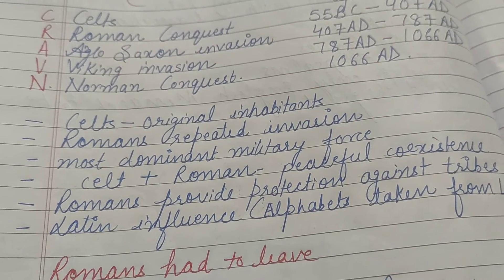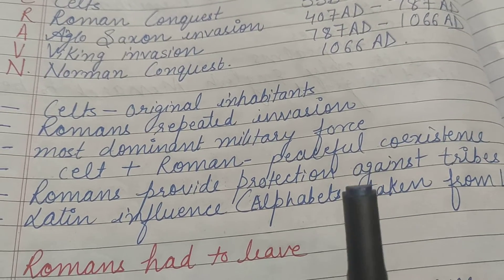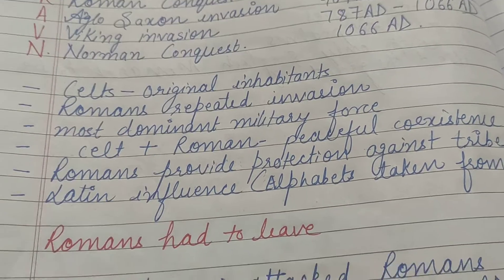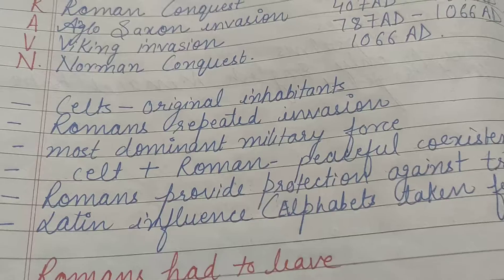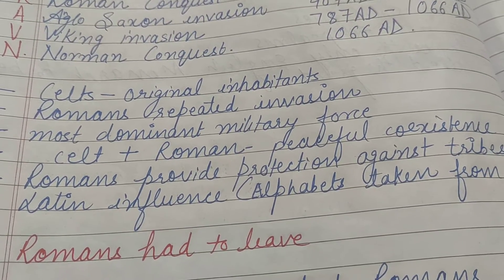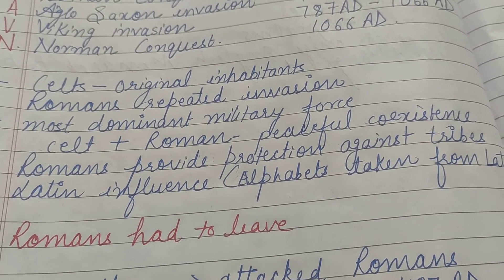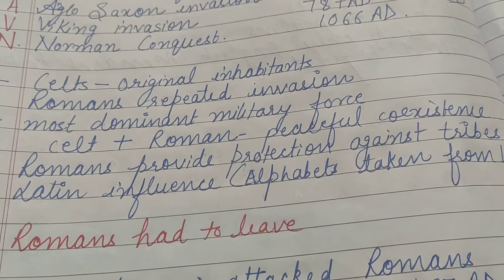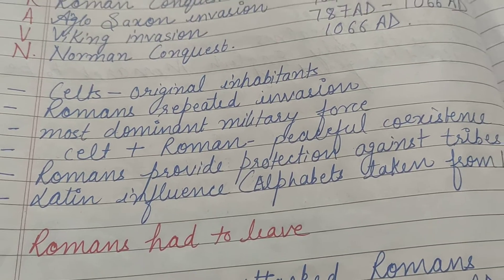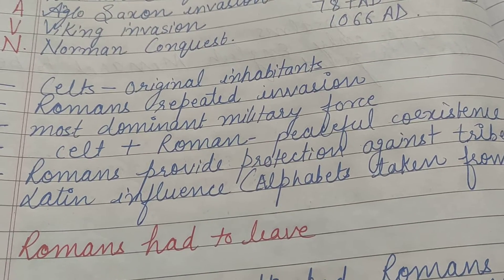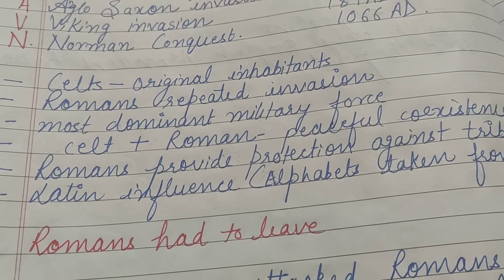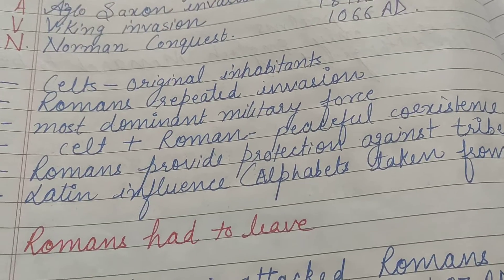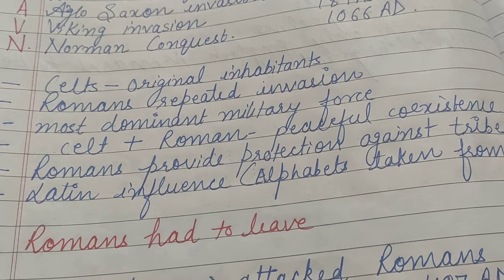Romans aur Celts ke beech mein peaceful coexistence tha, dono mein aapasi prem sambandh the. Celts ko bhi Romans ke aane se koi pareshani nahi hui, kyunki Romans unko protection provide karte the doosri tribes ke attack karne se, aur Romans ne Britain mein bahut sundar buildings bhi banaye. Jab Romans Britain mein aaye to wo apne saath Christianity bhi laaye, aur saath hi saath jo language dominant hui wo thi Latin — is samay Britain mein Latin language boli jaati thi.